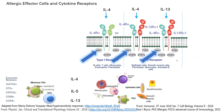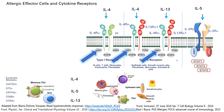Looking at the responses that produce intracellular activation, we also have interleukin-5. The receptor for interleukin-5 has two chains: interleukin-5 receptor alpha and interleukin-5 receptor beta. They signal through activation and phosphorylation of the Janus kinases and STAT1, STAT3, and STAT5, which are present in eosinophils. This is a very specific eosinophil response.